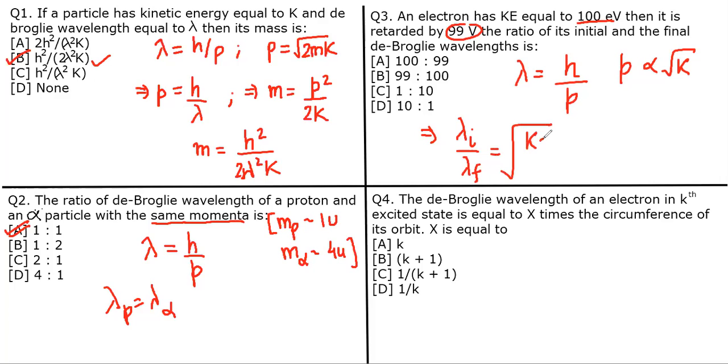The final kinetic energy is 100 - 99 = 1 eV (because you're retarding it, slowing it down), and the initial kinetic energy is 100 eV. So the ratio is √(1/100) = 1/10.